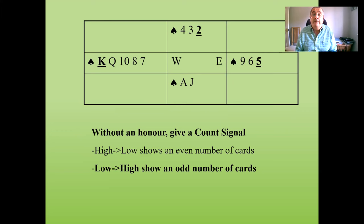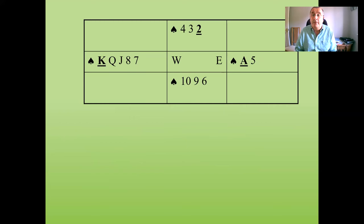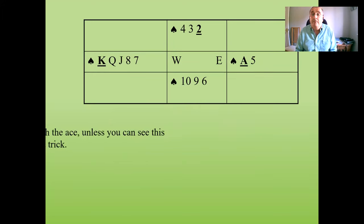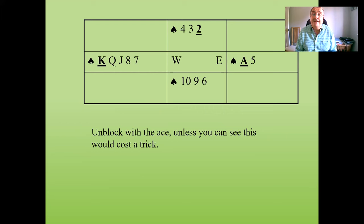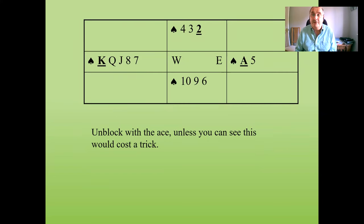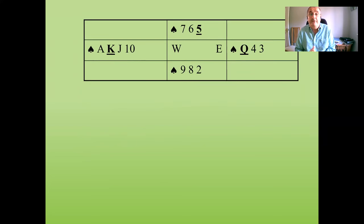There are other situations where it's good to play your honor. If your partner leads the king and you've got the ace and a small card, you need to play the ace to unblock, so you can return the suit and take the first five tricks. If you don't play your ace, you'll win the second trick with it but then be stuck — you'll only make two tricks in the suit. In general, you should unblock with the ace unless you can see it would cost a trick.